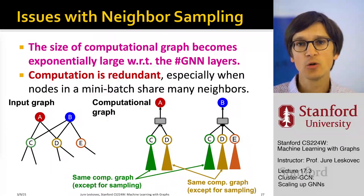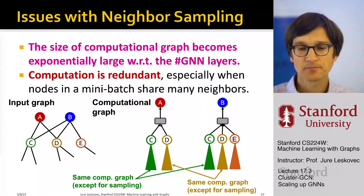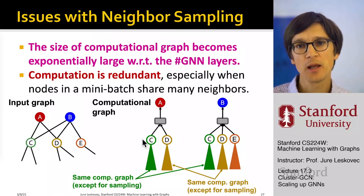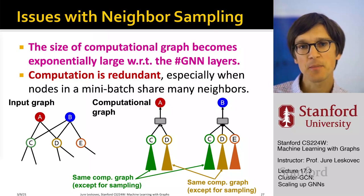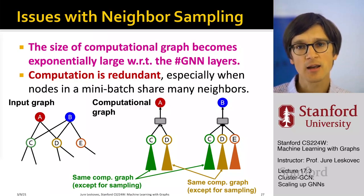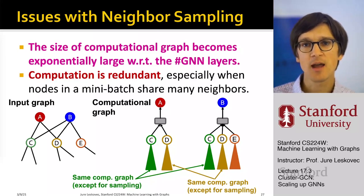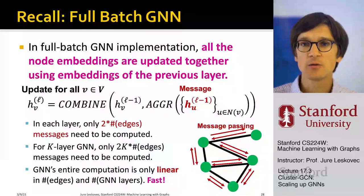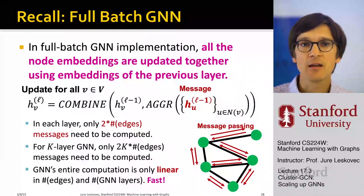There are two approaches to address this. One is to realize that this computation is duplicated and compute it only once. There is a nice paper at last year's KDD called HEGS — Hierarchical Aggregation Graphs — that basically prevents redundant computations. The second approach will be about Cluster GCN, which is what I'm going to talk about today.